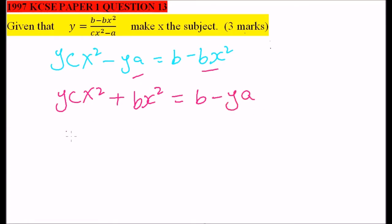Let's factor x squared out. So we have x squared into bracket yc plus b equals b minus ya.